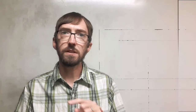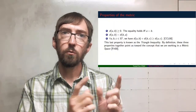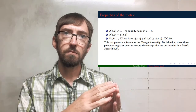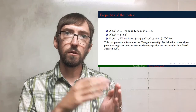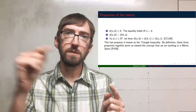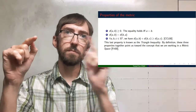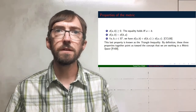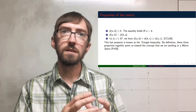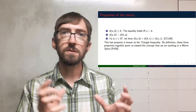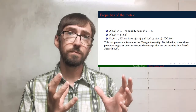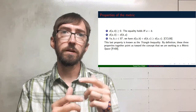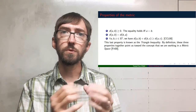We also have a symmetric property: whether I start at B and move to A, or start at A and move to B in a linear movement, we should have the same distance in either direction. And lastly, we have the triangle inequality, which tells us that two sides of a triangle added together are going to be greater than or equal to the third side.